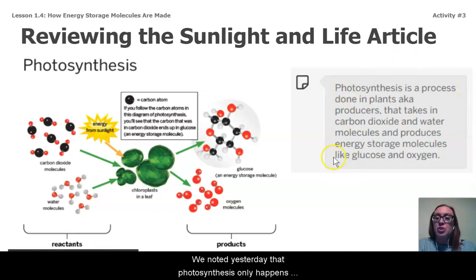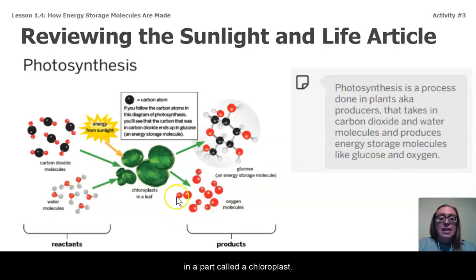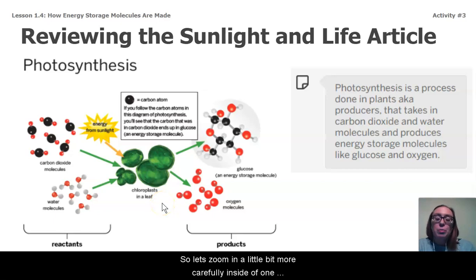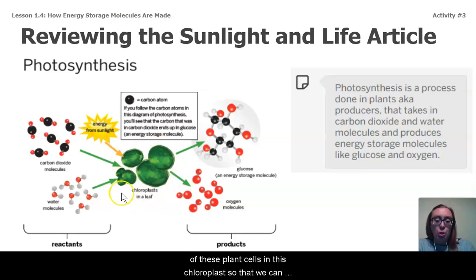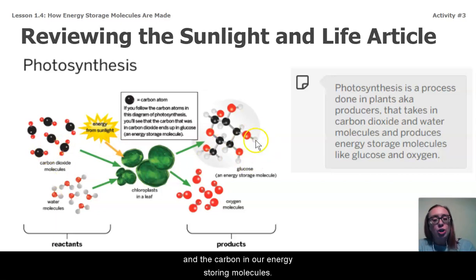We noted that photosynthesis only happens inside of plant cells, or inside of producer cells, in a part called a chloroplast. So let's zoom in a little bit more carefully inside of one of these plant cells in this chloroplast so that we can see more clearly the connection between carbon in carbon dioxide and the carbon in our energy storing molecules.